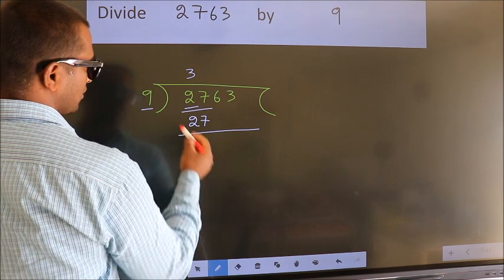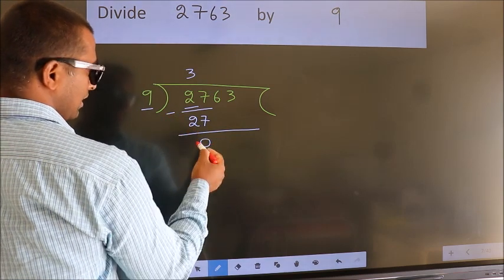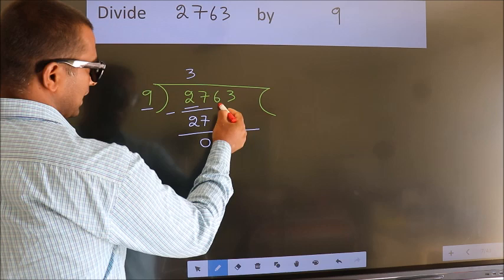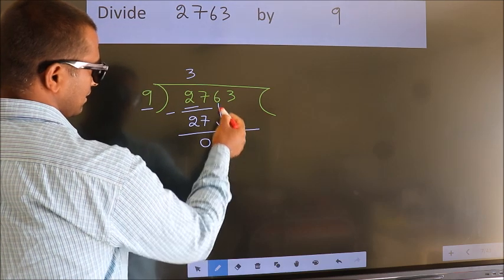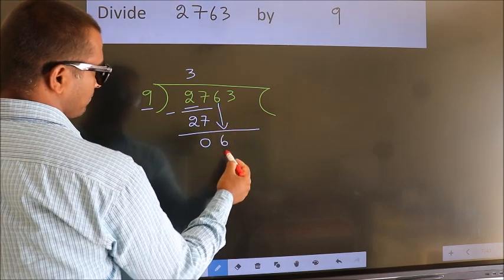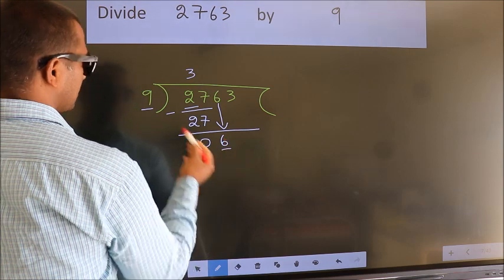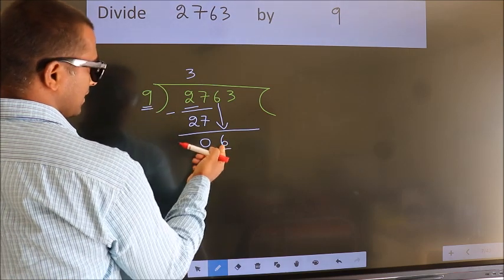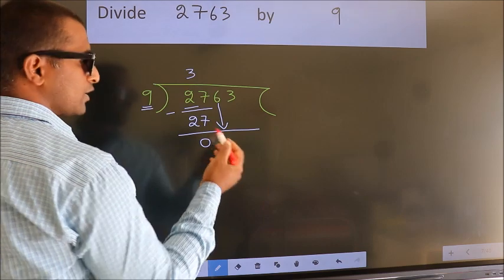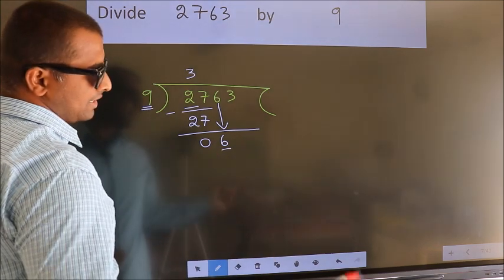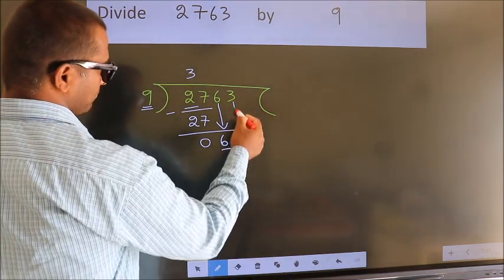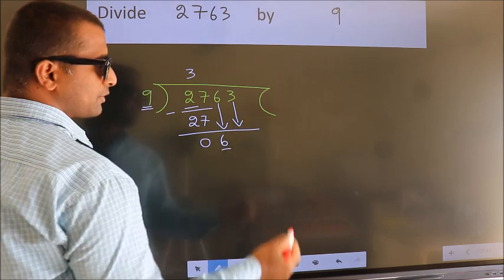Now we should subtract. We get 0. After this, bring down the next number, so 6 down here. We have 6 here. 9? 6 is smaller than 9, so we should bring down the second number. The rule to bring down the second number is...